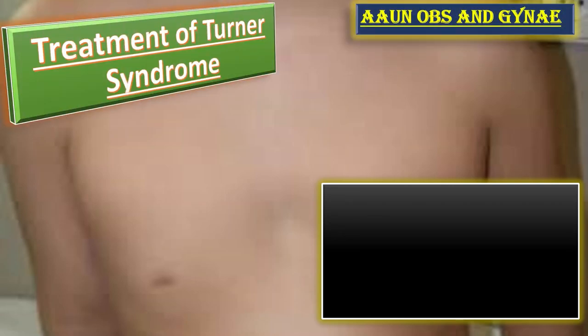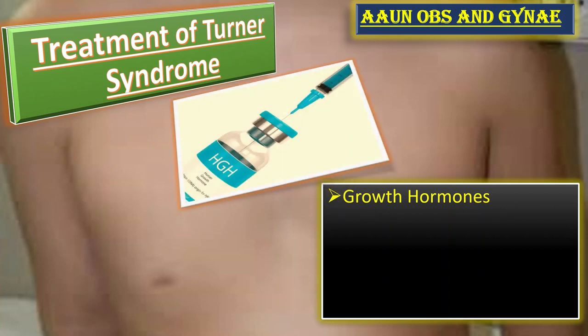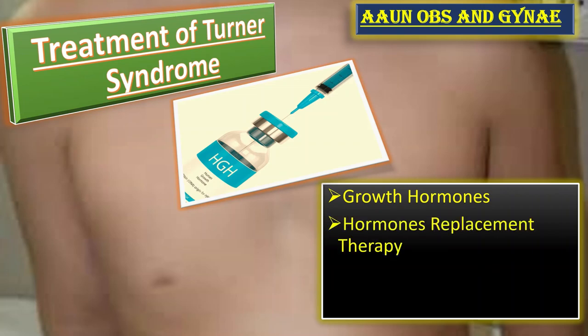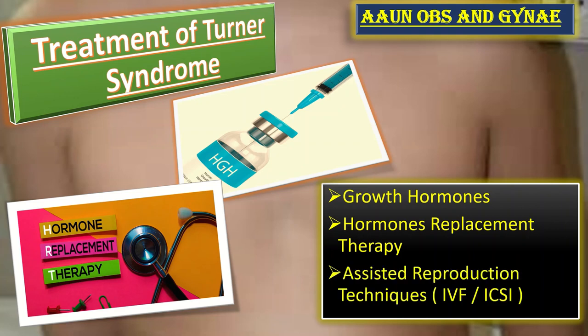Let us talk about the treatment of Turner syndrome. First, there is a need for growth hormones as these patients have short stature, so human growth hormone is given. The second point is hormone replacement therapy. The third management point is about fertility issues, for which we use assisted reproductive techniques including IVF and ICSI.